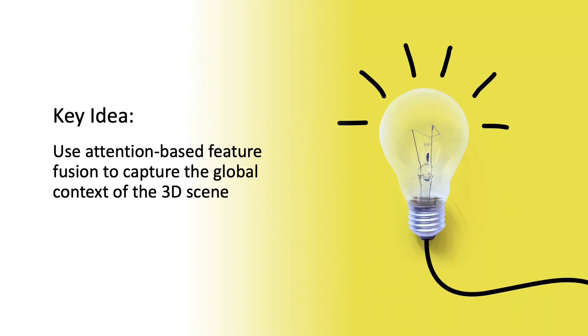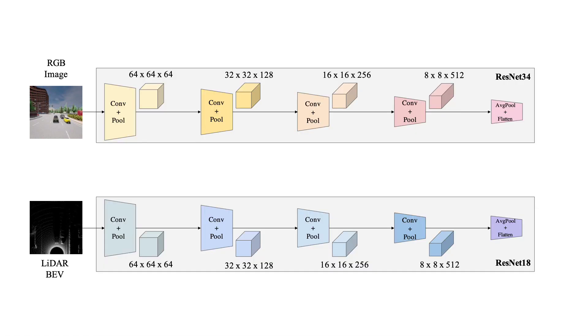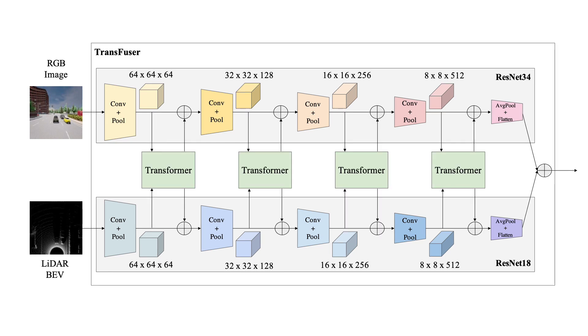Our key idea is to use attention-based feature fusion to capture the global context of the 3D scene. In particular, we use transformers for this purpose. We consider RGB image and LiDAR bird's-eye-view projection as input to our model. These are then processed by ResNet modules, resulting in feature maps of different resolution throughout the encoder. We then use transformers to integrate image and LiDAR features at multiple resolutions.